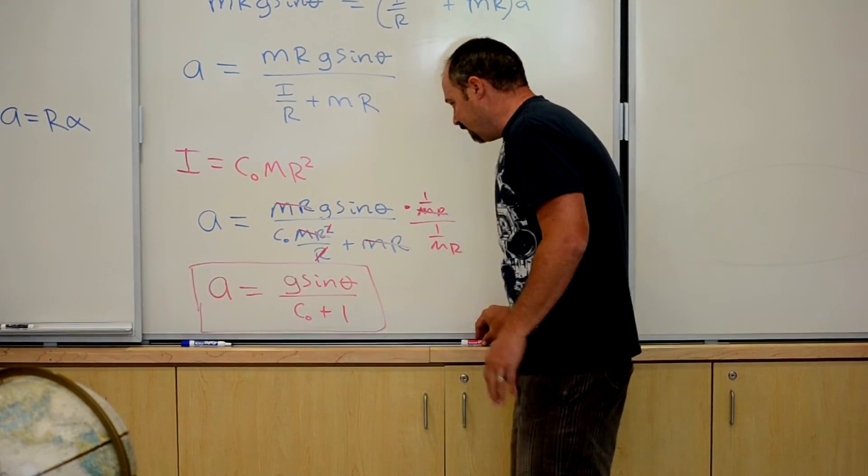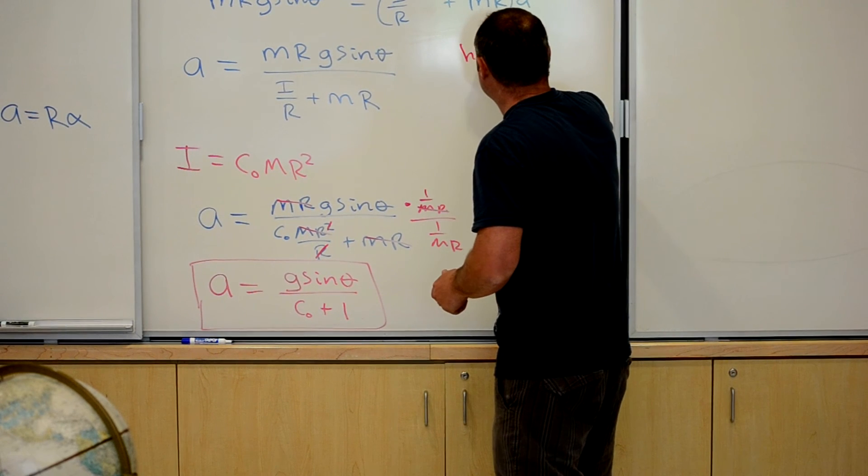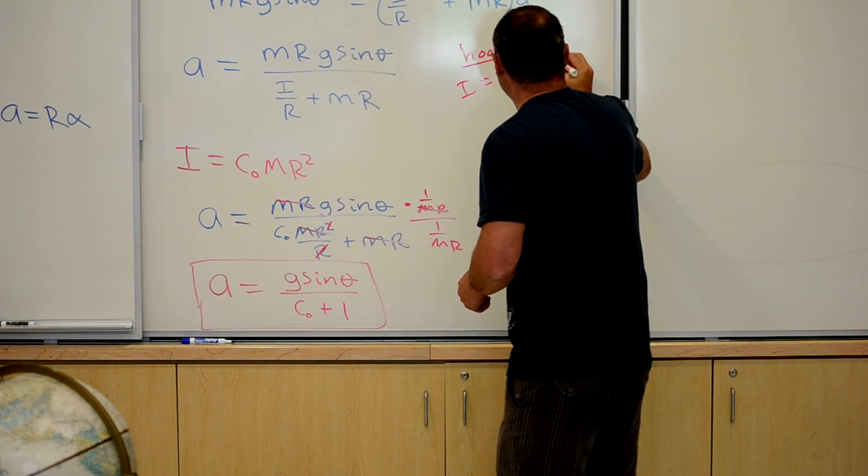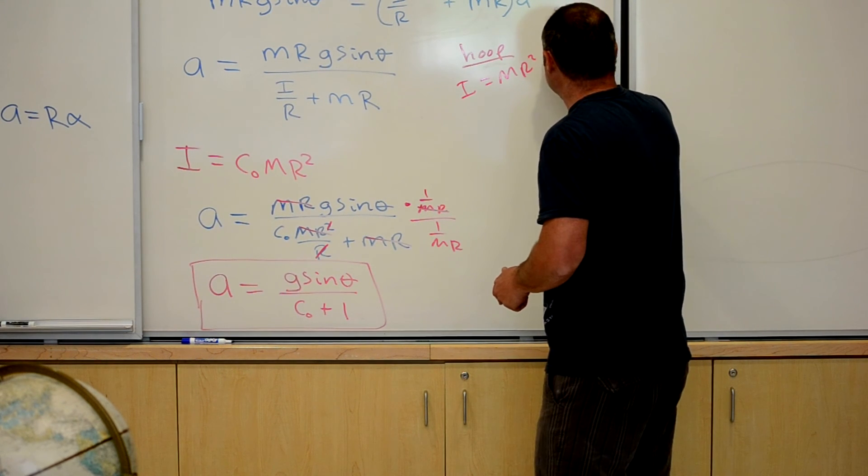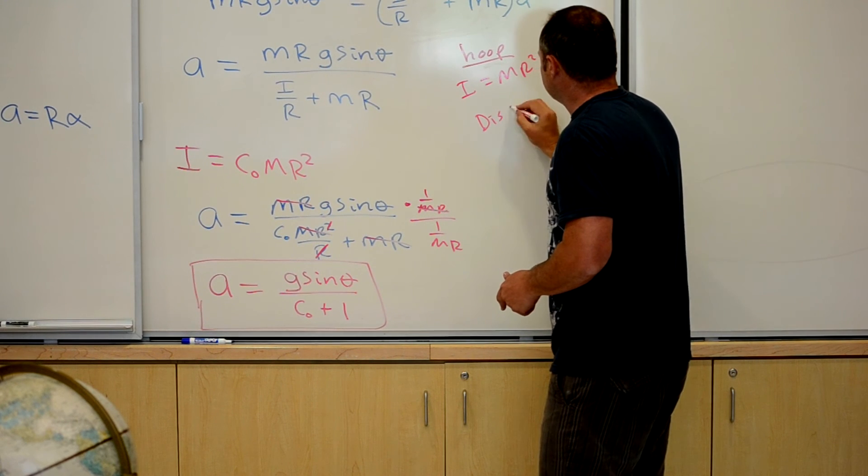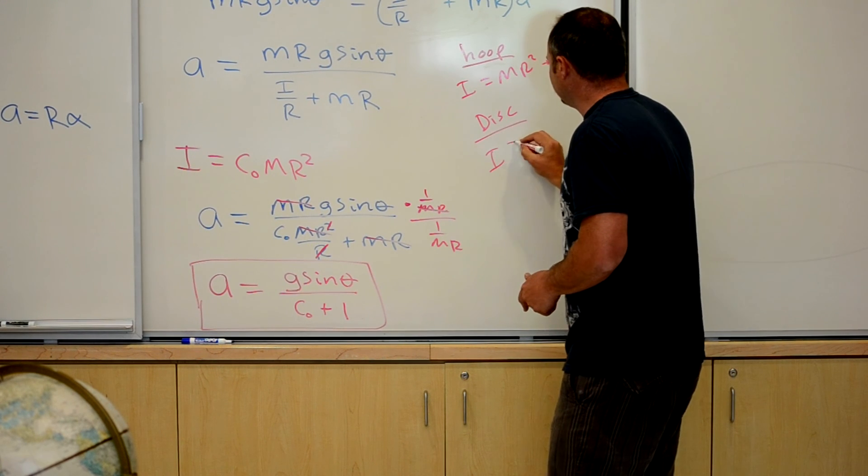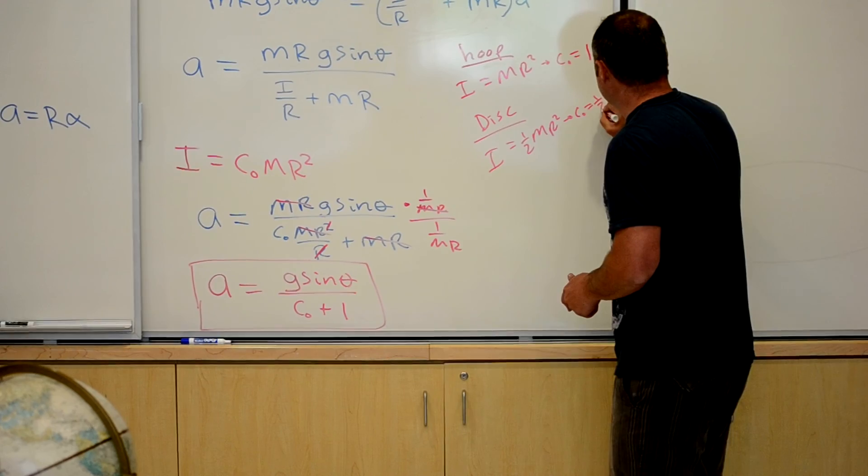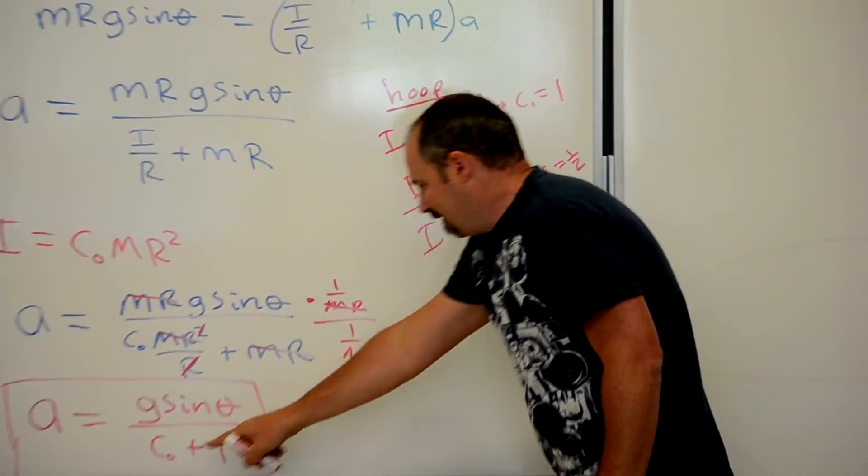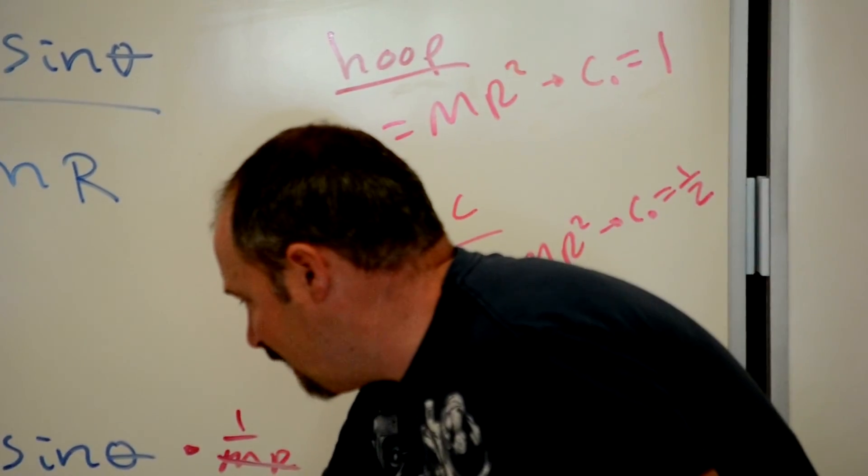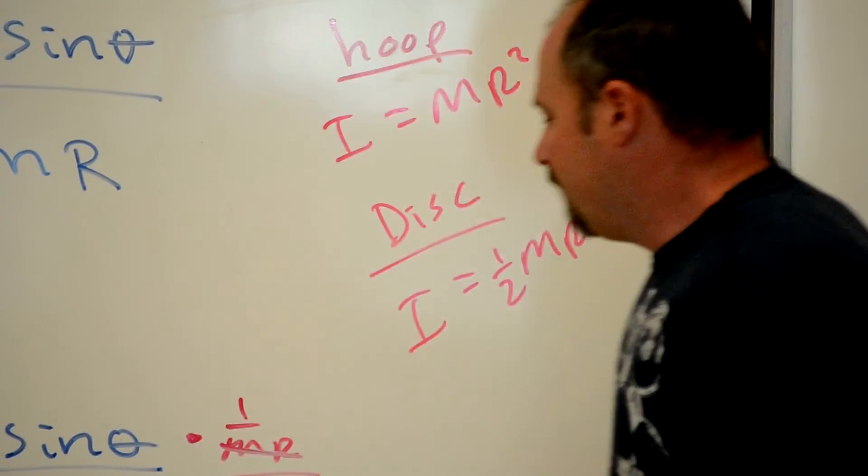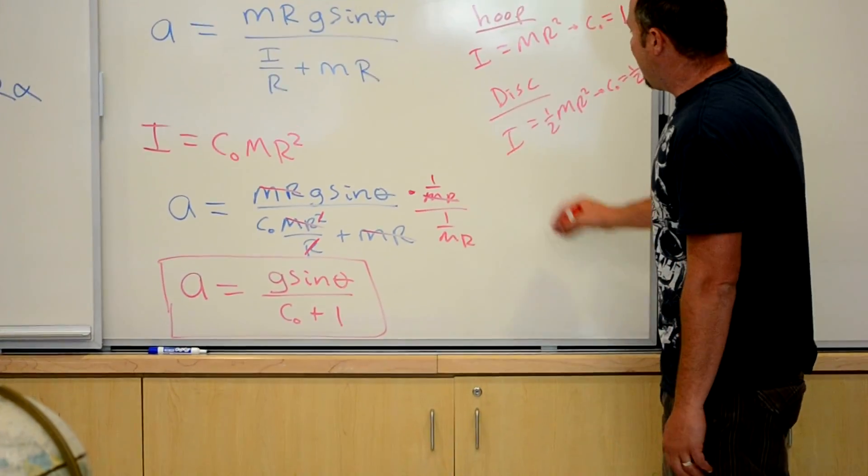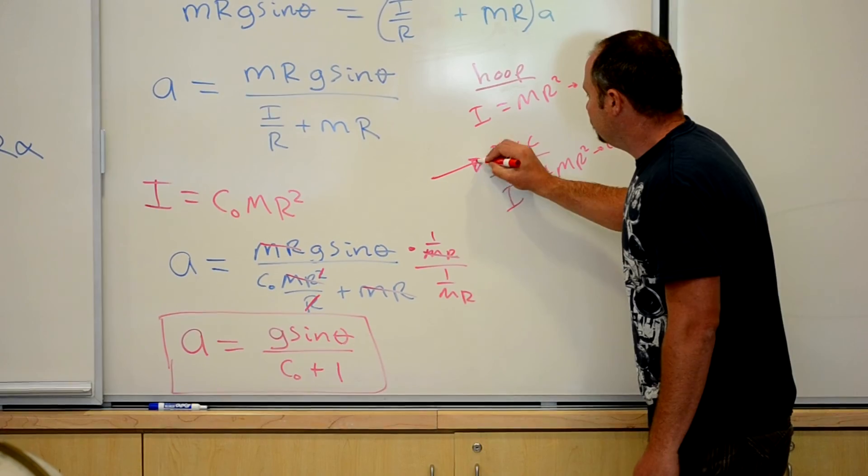With our prediction then, we know that for the hoop, the moment of inertia equals mr squared, and therefore c naught equals 1. So, for the disc, the moment of inertia is 1 half mr squared telling us c naught is equal to 1 half. So, for a smaller c naught, we're going to get a smaller denominator, and therefore a larger fraction. So, I predict the disc will win.